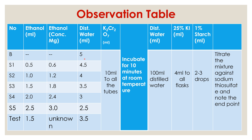The blank is made up to 5 ml with distilled water. S1 has 0.5 ml of ethanol, then 1.0, 1.5, 2.0, and 2.5 ml for subsequent tubes. For the test sample, we need to find the ethanol concentration. Each test tube is made up to 5 ml — for example, S1 with 0.5 ml ethanol gets 4.5 ml of distilled water; S4 with 2 ml gets 3 ml of distilled water. Then 10 ml of potassium dichromate is added to all test tubes, and they are incubated at room temperature for 10 minutes.